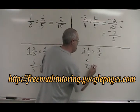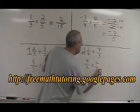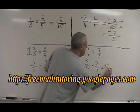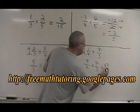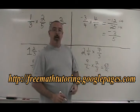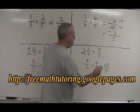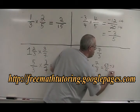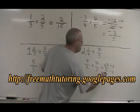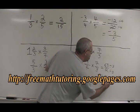Times 7 thirds. 9 times 7 is 63. 4 times 3 is 12. 63 and 12 have a common factor of 3. We divide them both by 3, and we get 21 over 4.